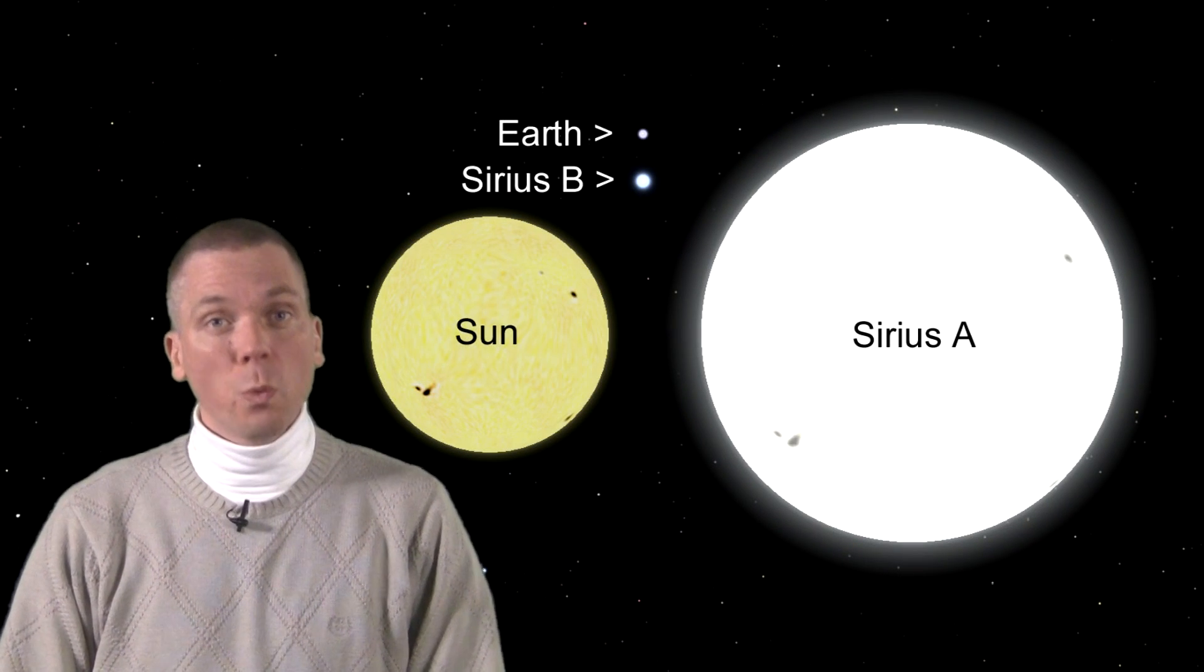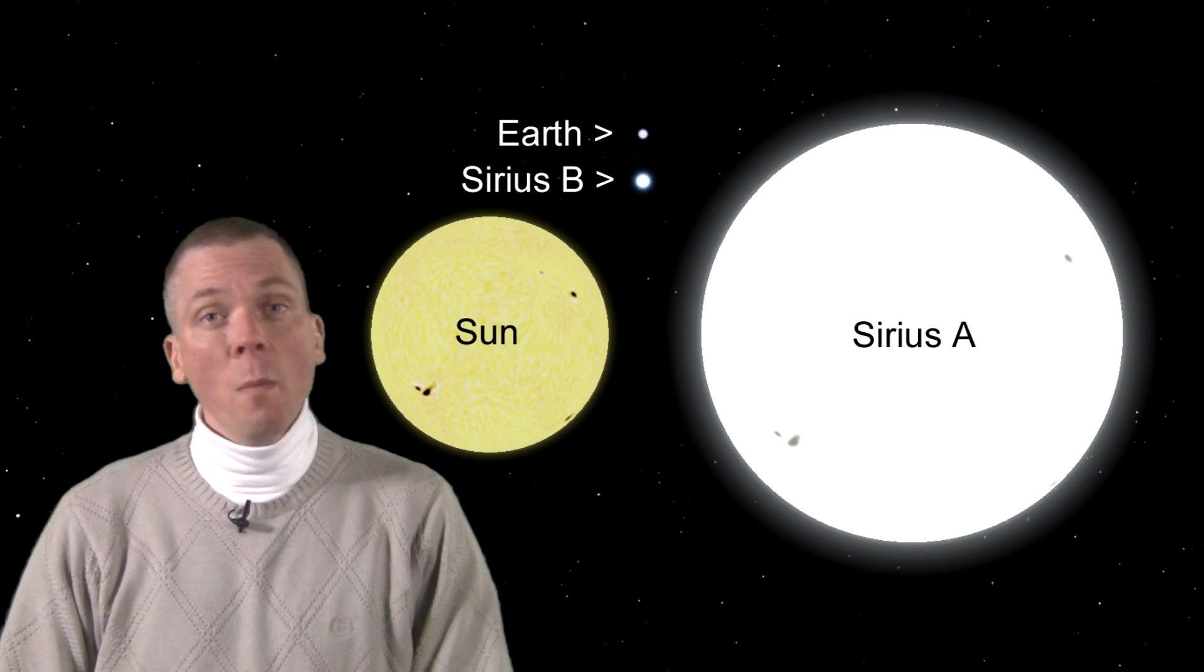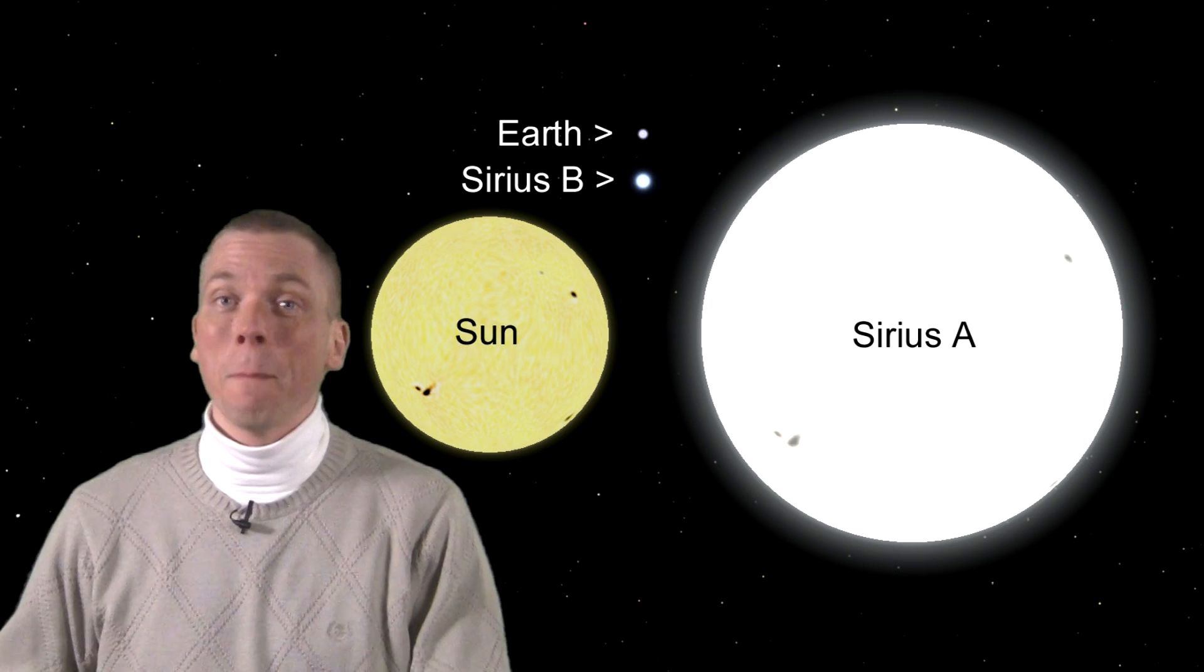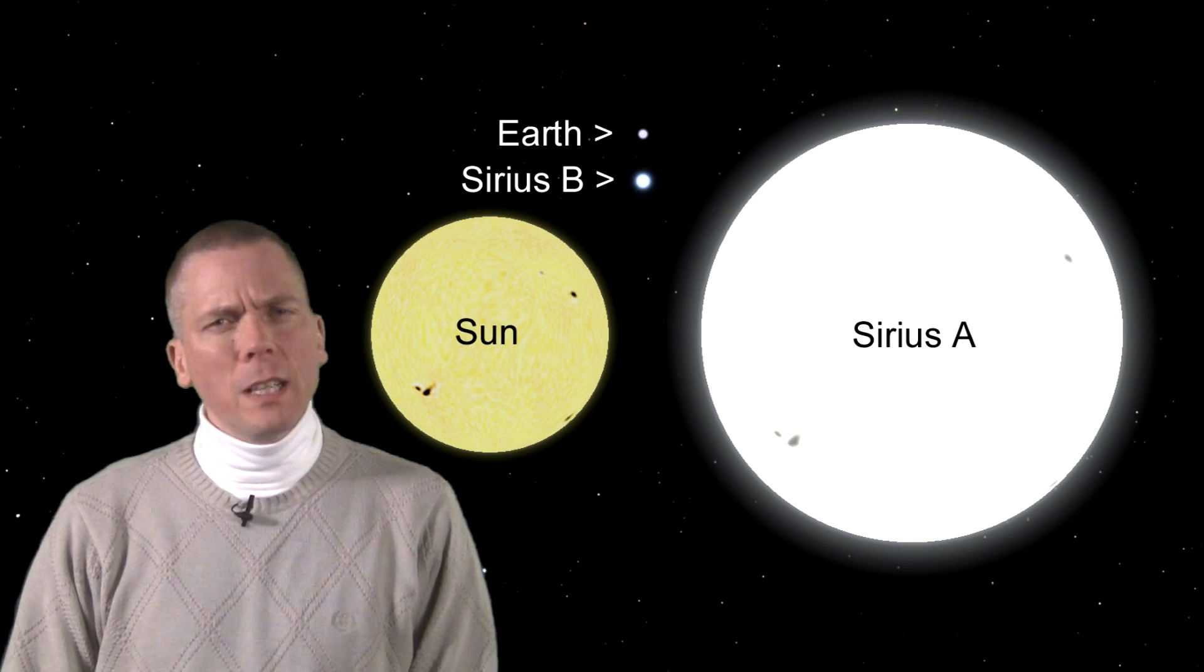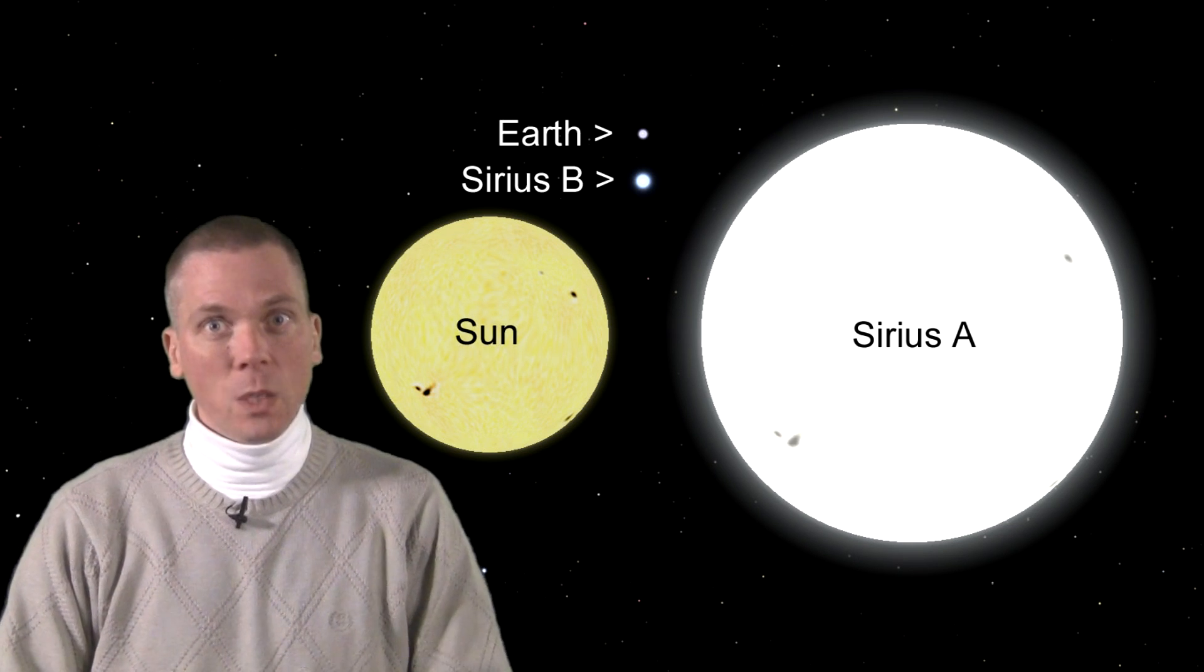But check this out, Sirius has an 8th magnitude white dwarf companion that packs almost our entire Sun's mass into a sphere the size of our Earth. Can we split these two and therefore see this white dwarf?